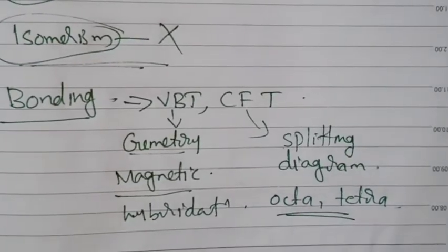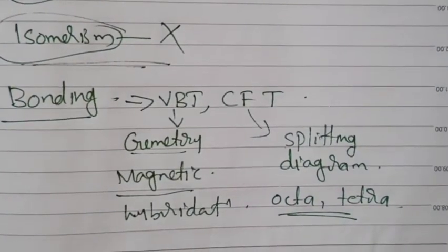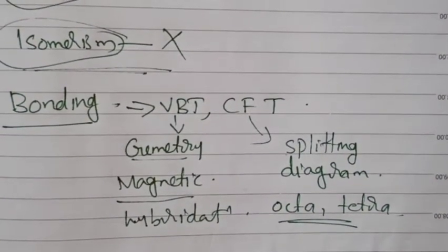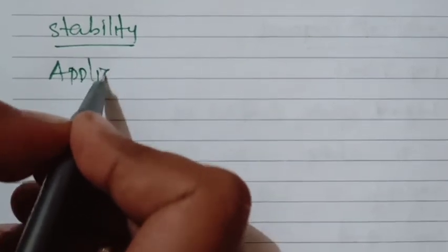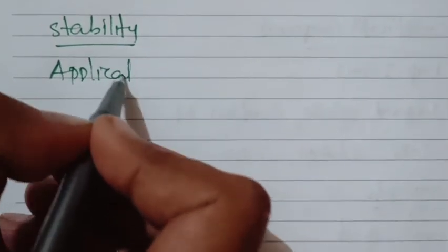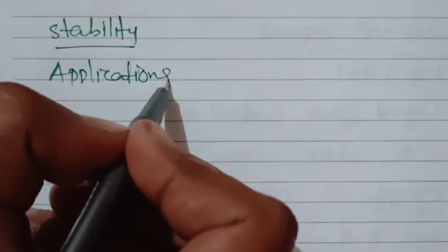From the exam point of view, coordination chemistry is very important. The last topic is the stability of coordination compounds. There are two types of stability constants, which is important. This also includes the applications of coordination compounds.